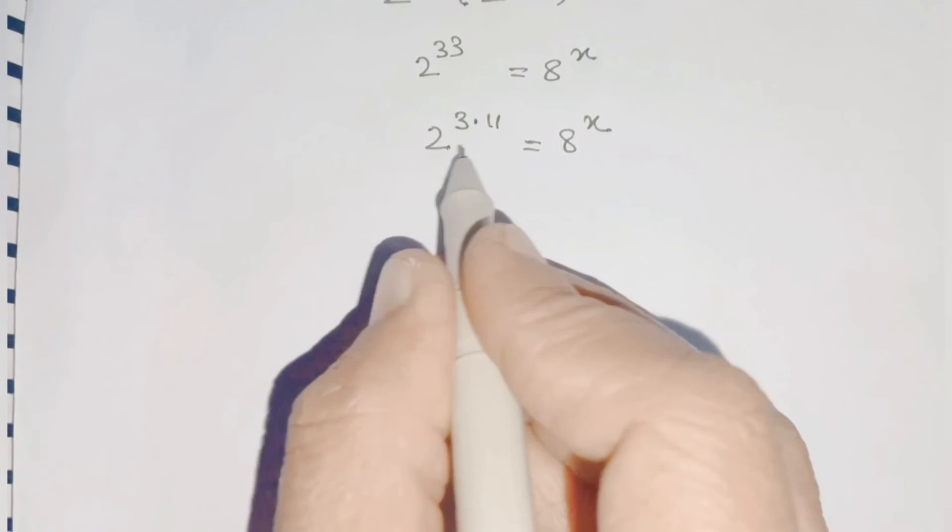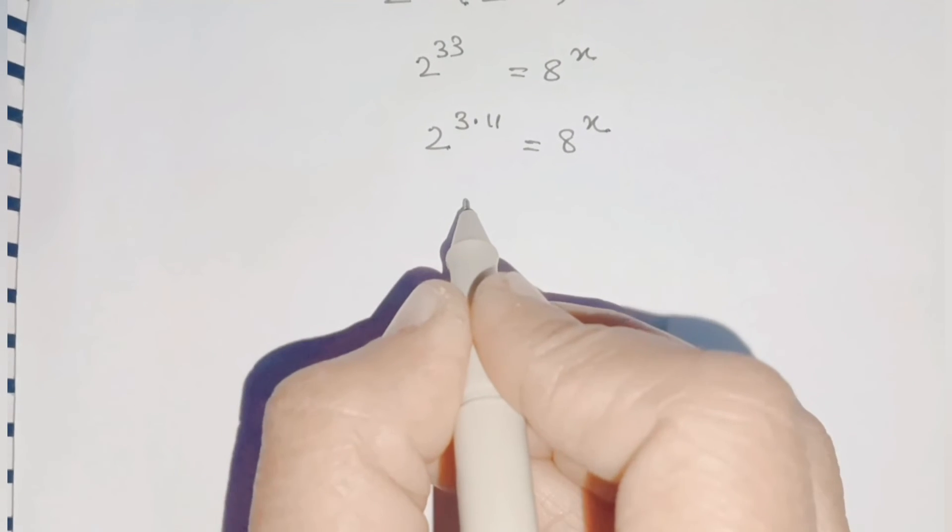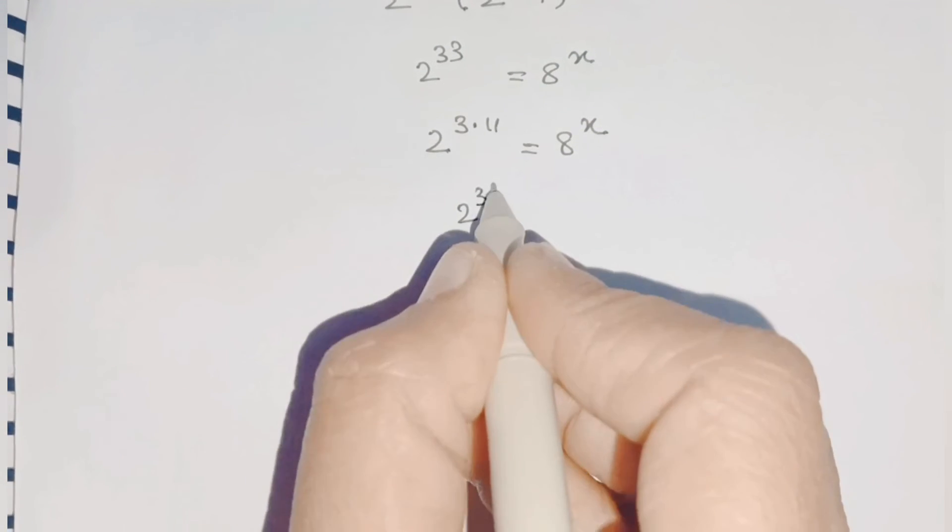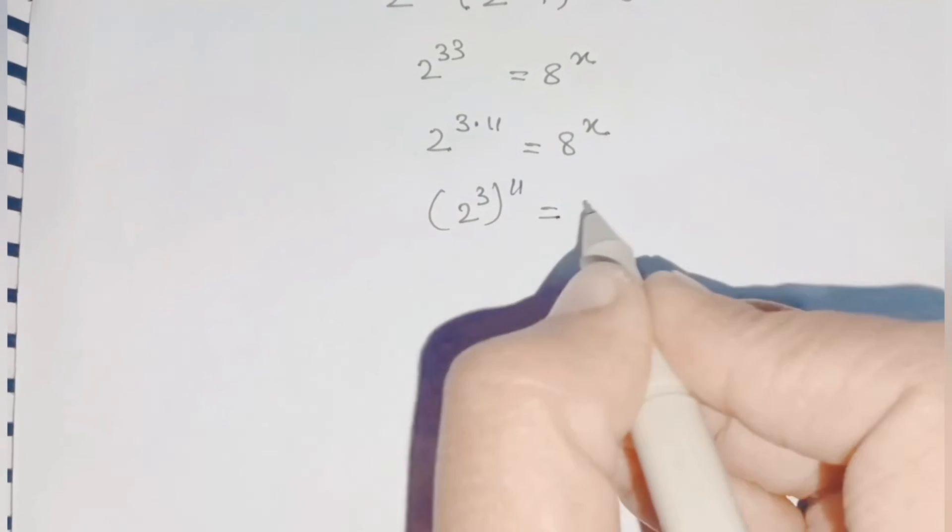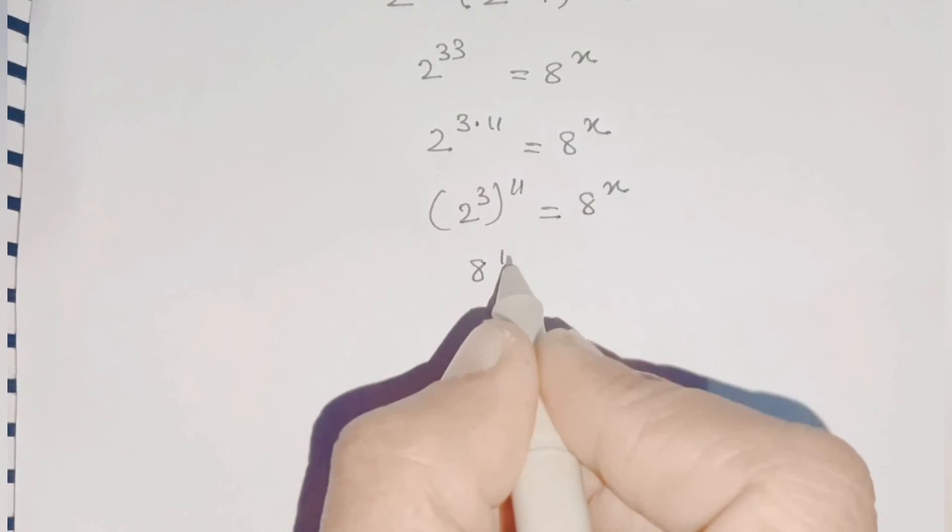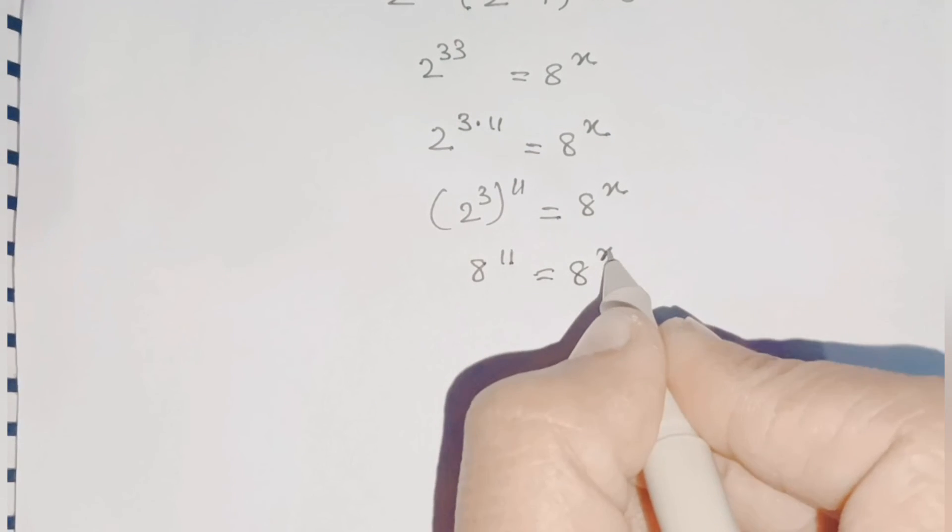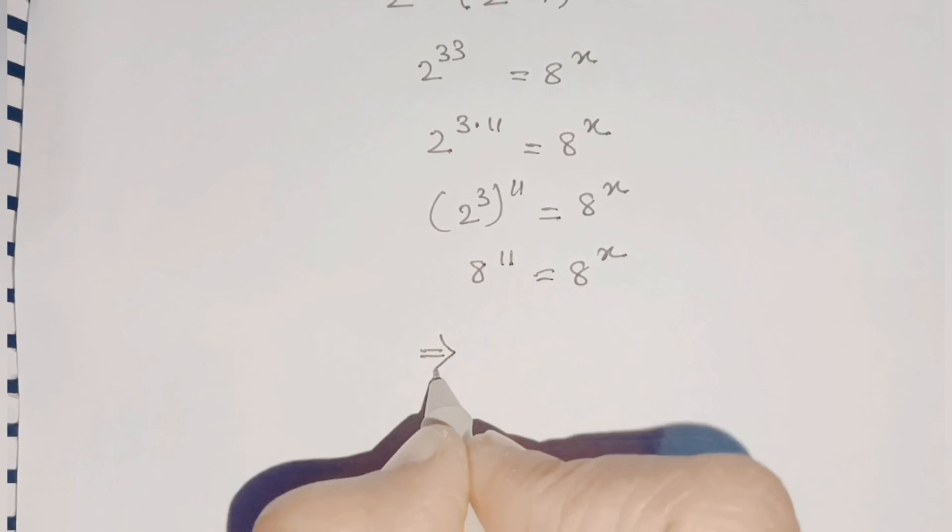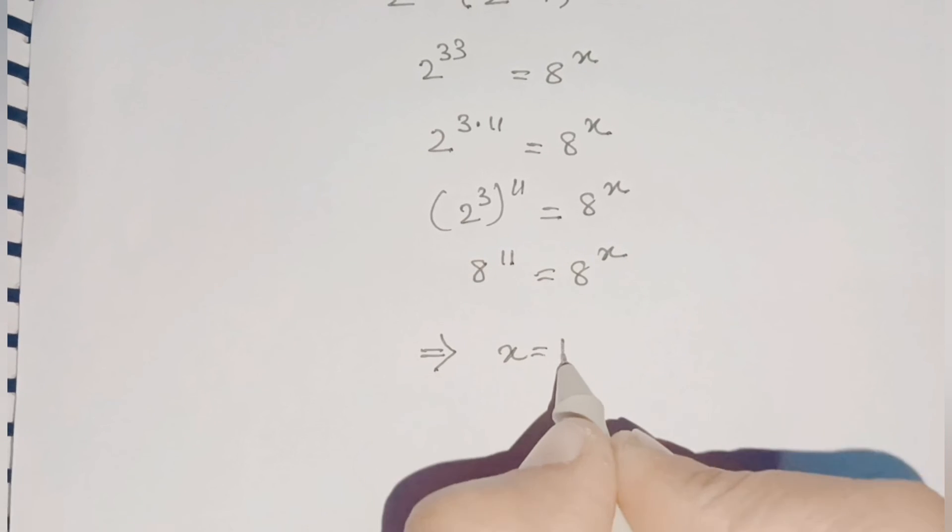Our left hand side is in the form of a raised to m into n, so we can apply the power of power rule. We know that 2 cube is 8, so we'll write 8 raised to 11 is equal to 8 raised to x. As we can see, bases on both sides are equal, that is 8, so we can directly equate the exponents.